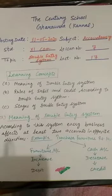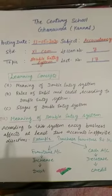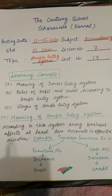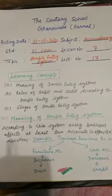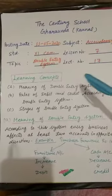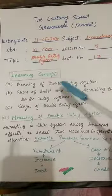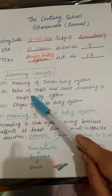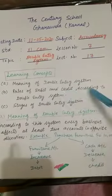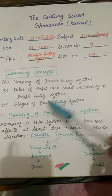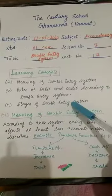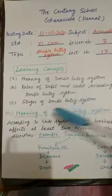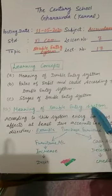Good morning dear students, this is Param Ji and today we will discuss chapter number seven: Double Entry System. Let's start with the learning concepts. We will discuss: first, the meaning of double entry system; second, rules of debit and credit according to the double entry system; and third, the stages of double entry system.